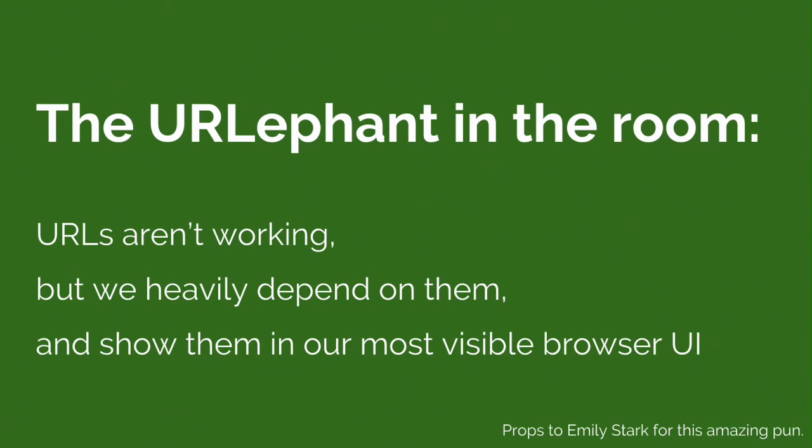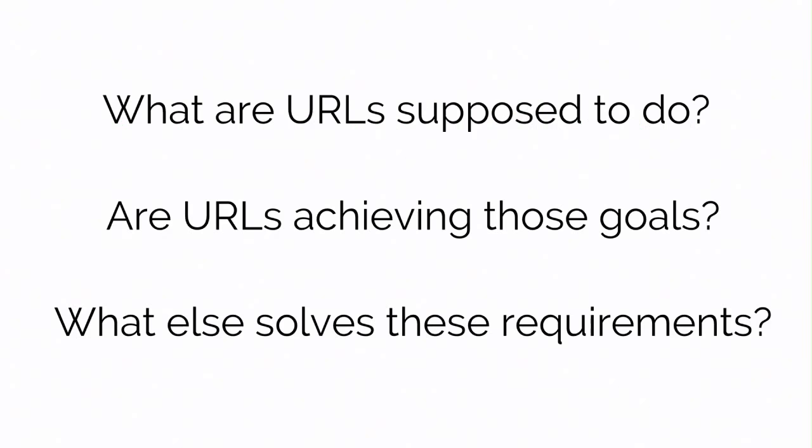We've started to call this the URL elephant in the room. URLs are not working well, but we heavily depend on them for all sorts of use cases, and we show them in our most visible UIs in many applications. On the Chrome team, we've started to discuss what URLs are used for and which use cases they actually succeed at. We've started to brainstorm alternatives that might better solve some of these requirements — and keep in mind, we're not talking about changing things under the hood of Chrome or dismantling DNS. We're really just talking about how these things appear in our UI.